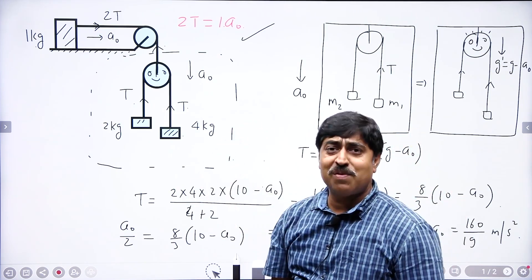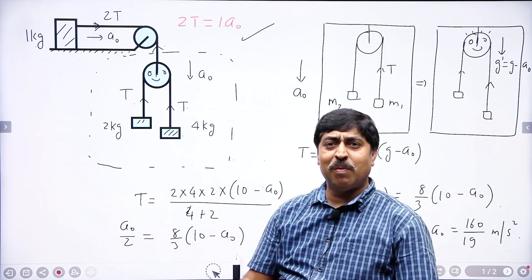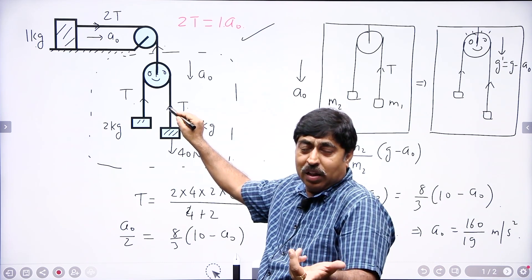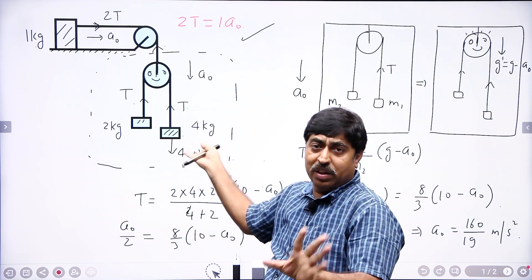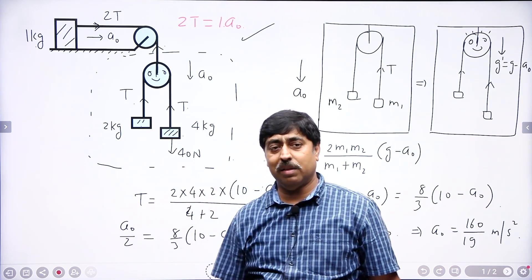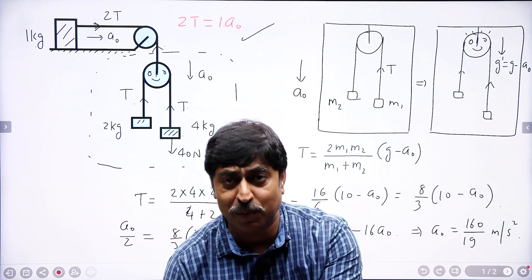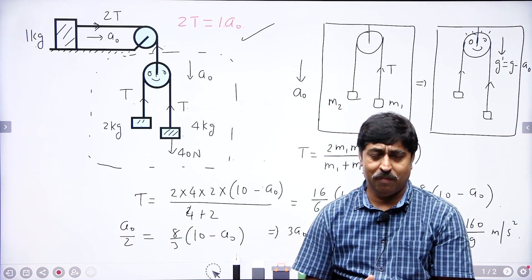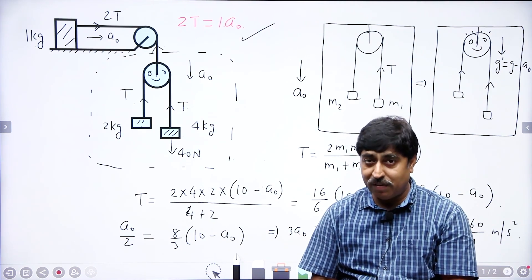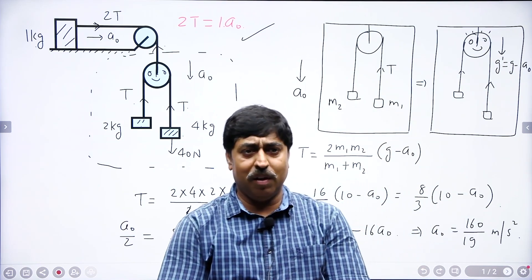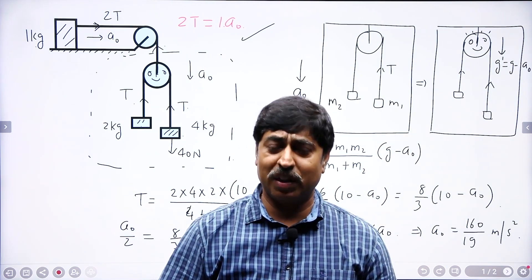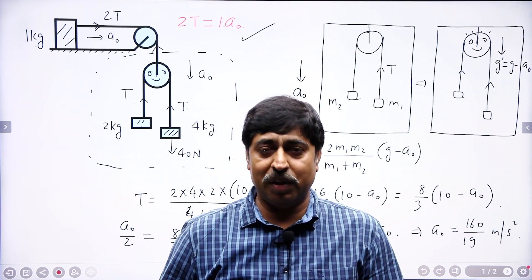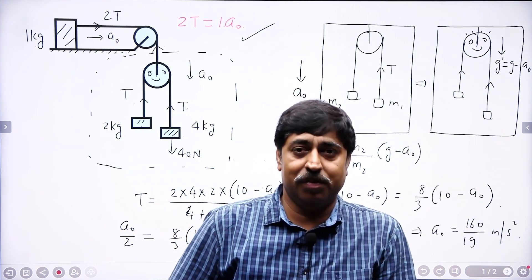Now go in the reference frame of ground. This block is having a force of weight — that is 40 Newton — and another force is tension. So 40 minus T is mass times acceleration; you get the acceleration of this block. Similarly you can write the acceleration of the other block. This is the shortest, quickest method of solving this problem. I hope you have understood what I am trying to explain. Keep sharing the videos — please help me increase my subscriber base. That will keep me motivated to keep feeding you with such amazing tips and tricks for JEE Physics. Goodbye.